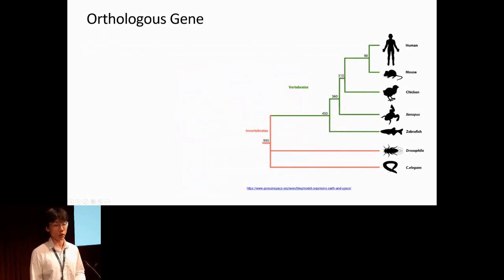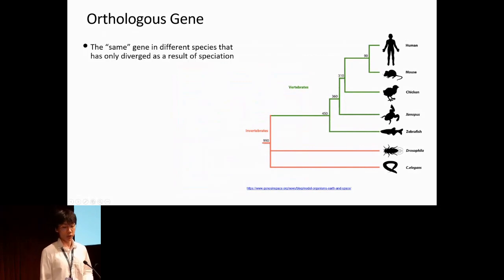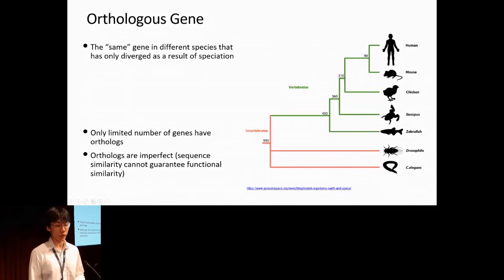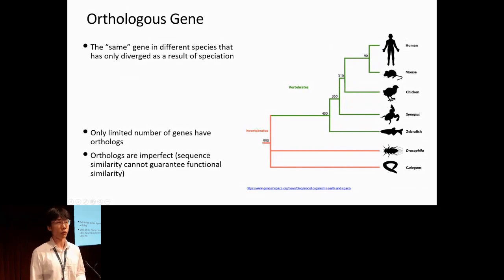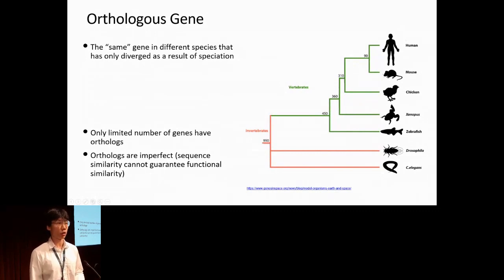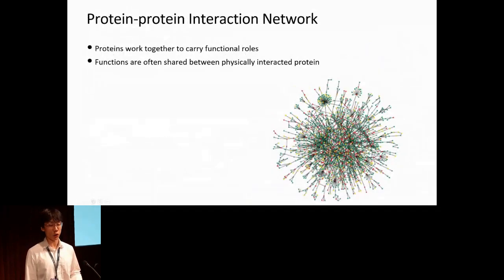People previously often use orthologous genes as links between different species. Orthologous genes are the same gene in different species that diverged because of a speciation event. There are two main problems with that: first, there are only a limited number of genes that have orthologous genes; and second, people generally determine orthologous genes using sequence similarity, which cannot always guarantee functional similarity. So people are trying to incorporate other kinds of information to better infer functional relationships between genes.